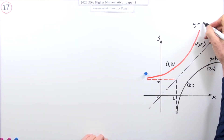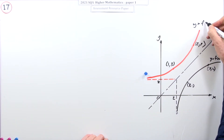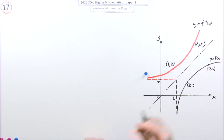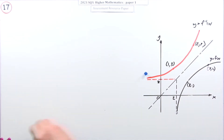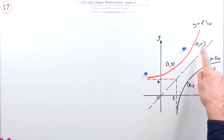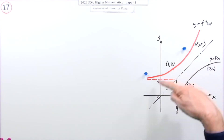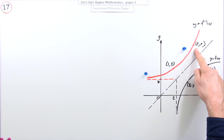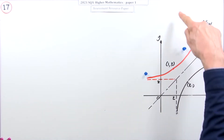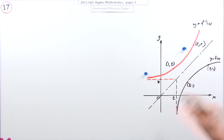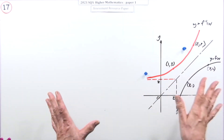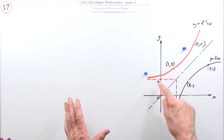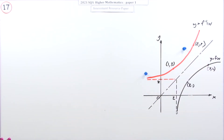So y equals f inverse of x. Putting in those two coordinates gets you the second mark - make sure you put them in. It's not artistry; the numbers will give you the marks.